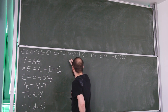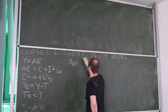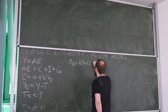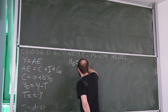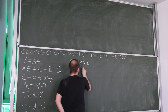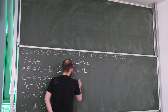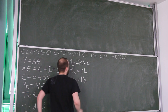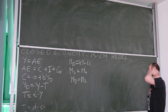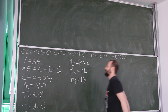For the money market, it is described by three equations: money demand given by ky minus li, money supply given exogenously by the central bank, and the equilibrium condition that money demand equals money supply.